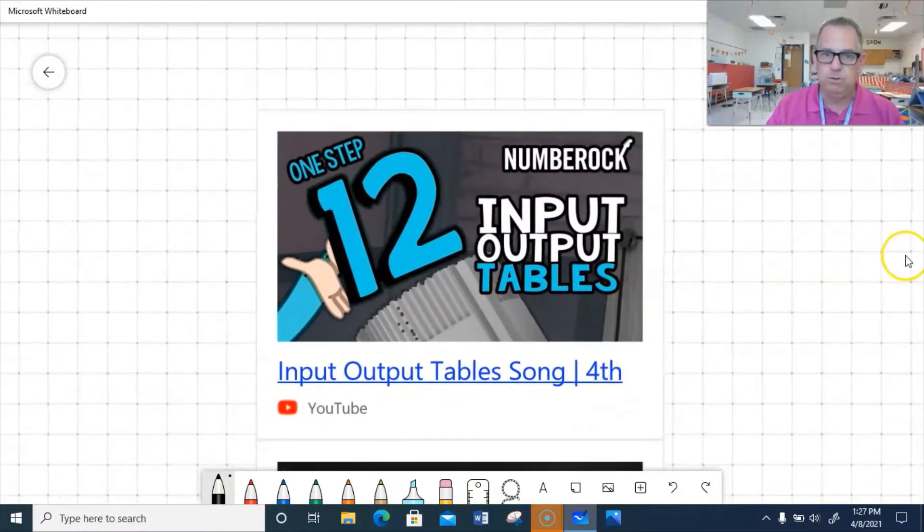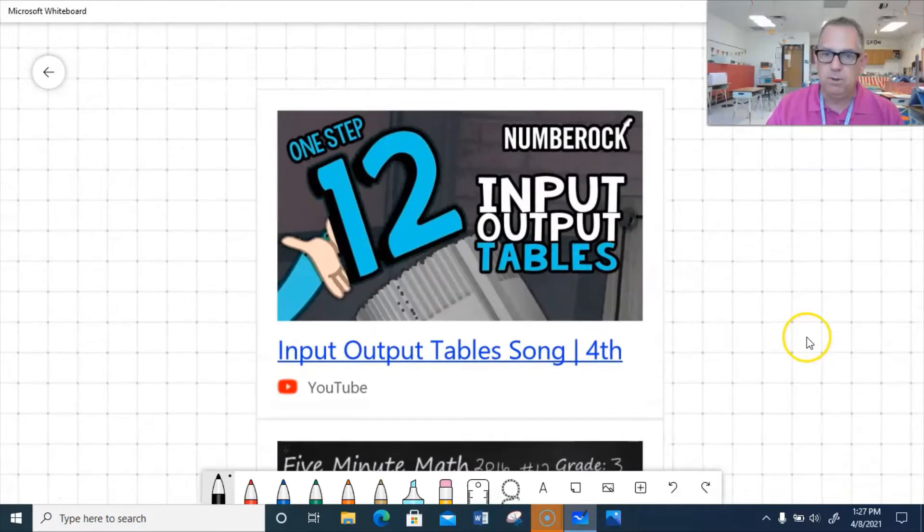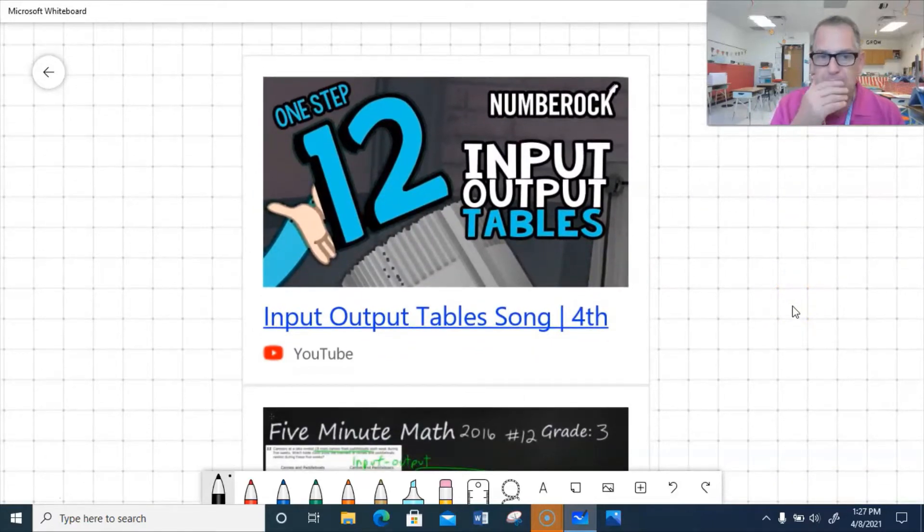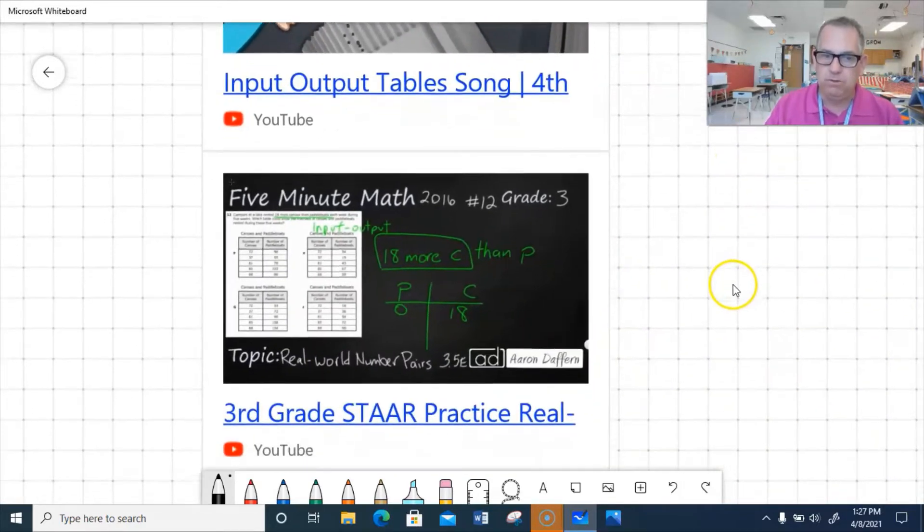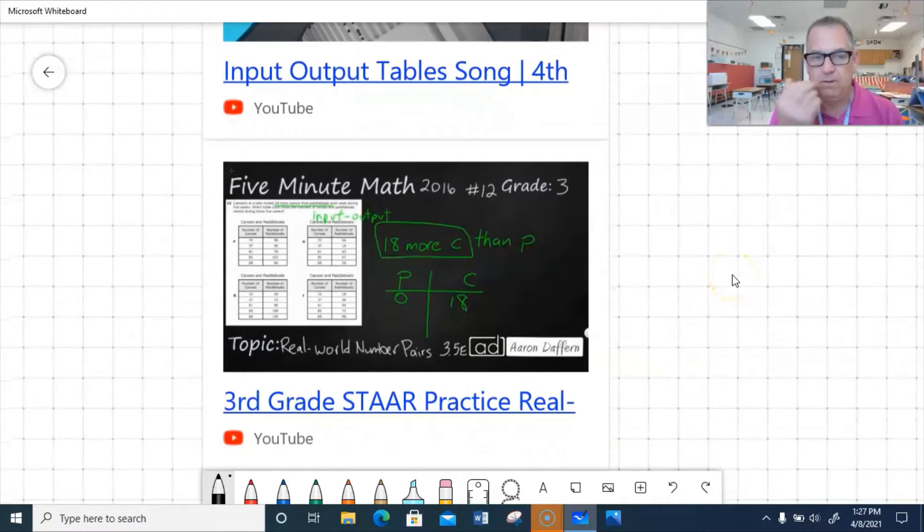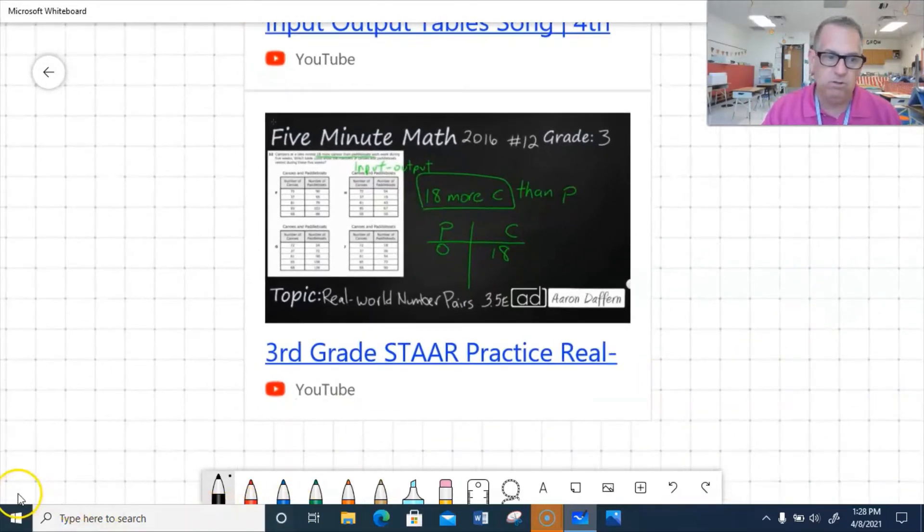I've got a couple videos. This is pretty cool. This is a number rocks video. They're putting the steps to understanding input-output tables to SONG. And they're talking about the multiplication division rules a lot on that video. And we've also got Aaron. He's working out one of the STAR questions from 2016. It's question number 12. It's over input-output tables. Or sometimes they call them number pairs. And on this one, he kind of talks a little bit about the addition and subtraction rules when we're dealing with input-output tables. So, let's get ready and watch these two videos.